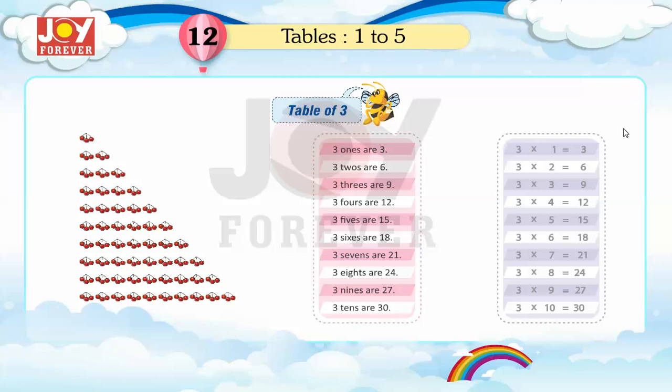3 twos are 6, 3 threes are 9, 3 fours are 12, 3 fives are 15, 3 sixes are 18.